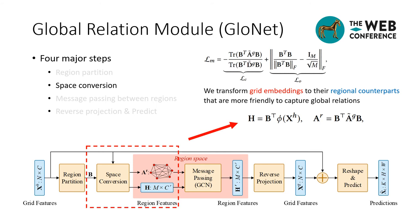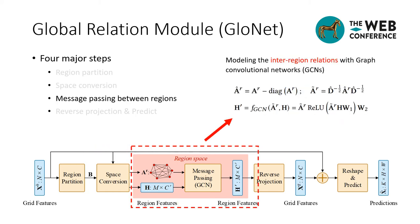The second step is space conversion. Given the grid cell features and the assignment matrix, we convert grid-based embeddings to their regional counterparts, which are more suitable for capturing global dependencies. We also need to find the connectivity between these regions. Using two equations, we generate the features of each region by directly aggregating the features of the corresponding grid cells belonging to that region. After space conversion, we obtain a new graph where each node denotes an irregular region and each edge models the interaction between two regions.